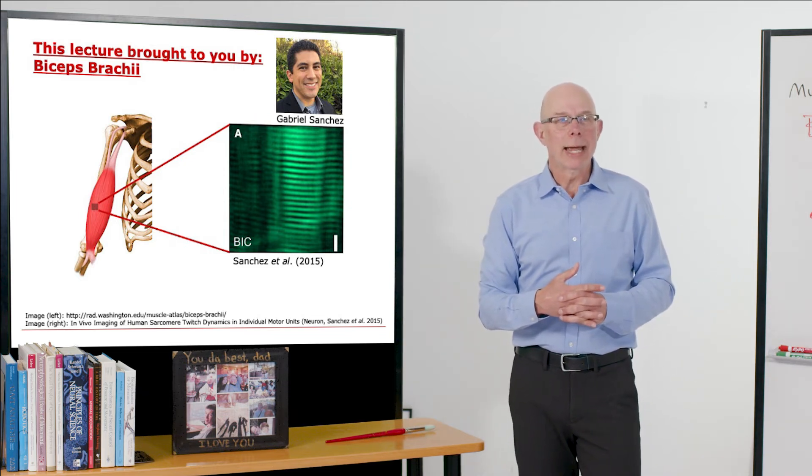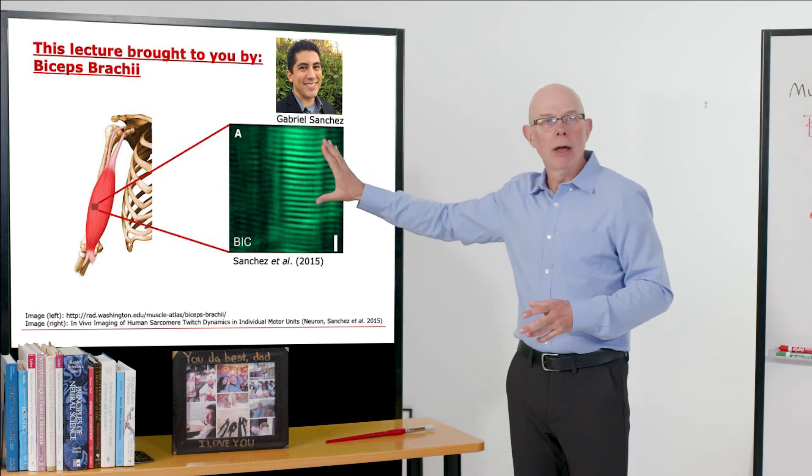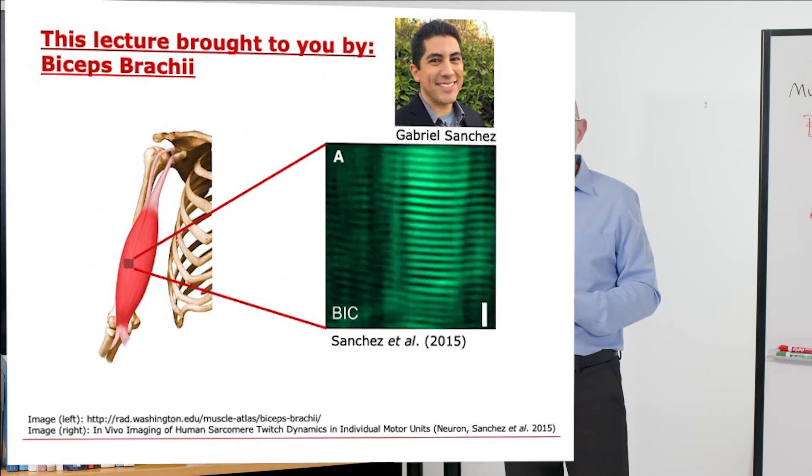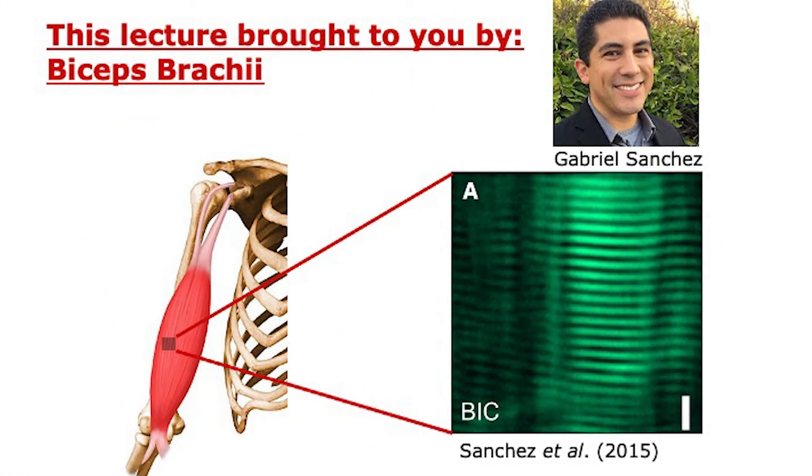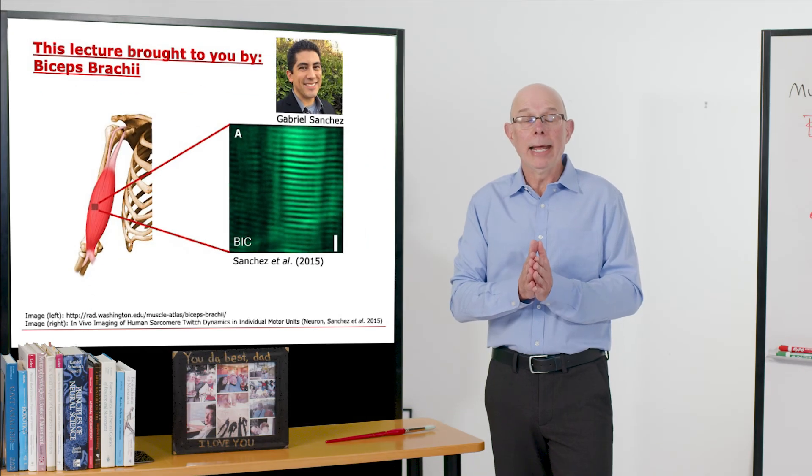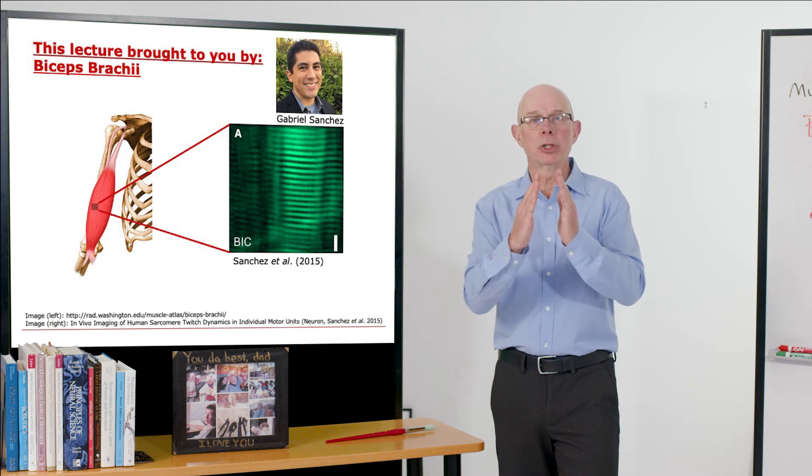Now, I'm showing this image taken here of these green sarcomeres. So sarcomeres are the basic building blocks of muscles, and their striped pattern gives skeletal muscle its name, striated muscle. And the distance between these stripes says how long the sarcomeres, the basic building blocks, are. It indicates where they are on their force length curve.